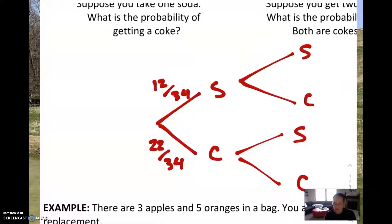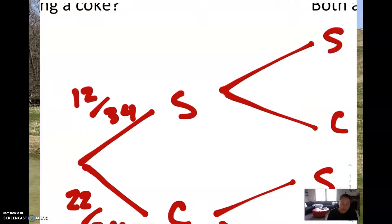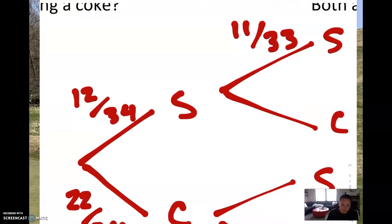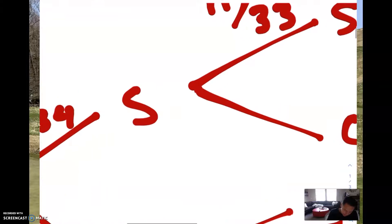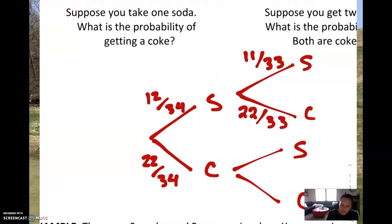Now we're going to play a little hypothetical world. Let's pretend that we selected a Sprite first. We had a 12 out of 34 chance of selecting a Sprite — let's say that happened. How many Sprites are going to be left? Well, if I just took one, there are only 11 Sprites left out of 33 total sodas remaining. If I selected a Sprite first, I still have all the Cokes remaining, so there are still 22 out of 33 Cokes remaining.